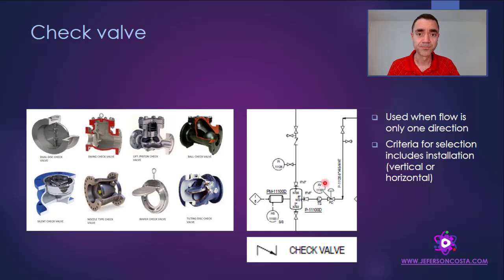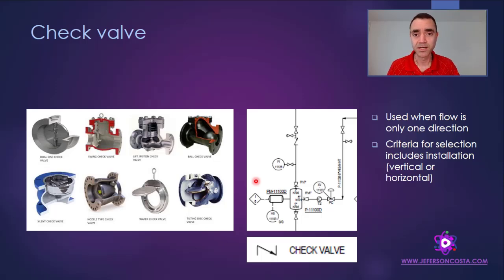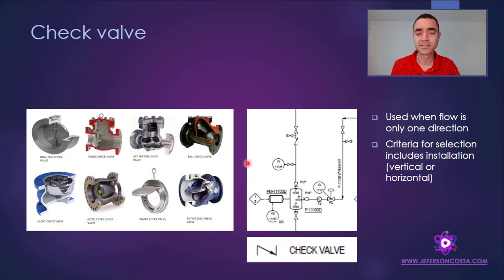A check valve is most common when we have a parallel system — for instance, pumps in parallel, compressors in parallel, or systems with different pressures. We use a check valve to guarantee that flow will stop if it goes in the wrong direction.